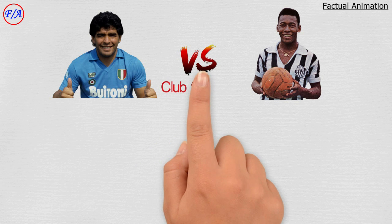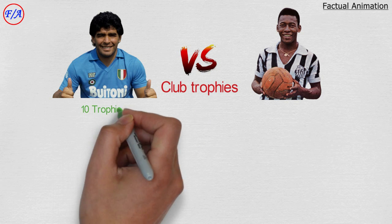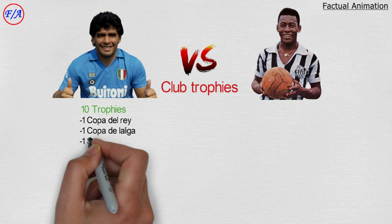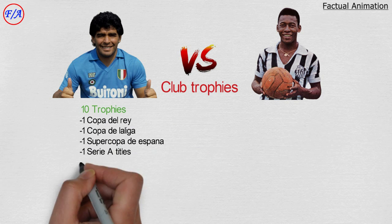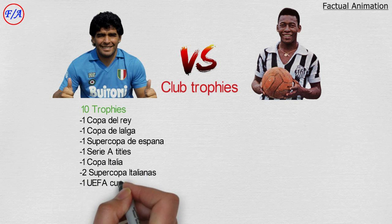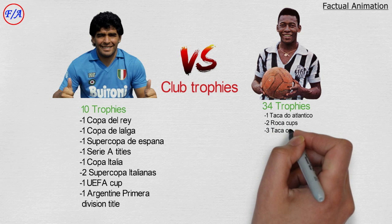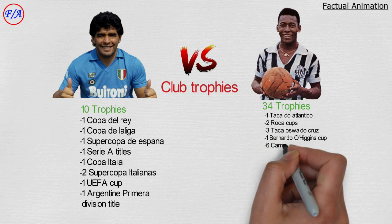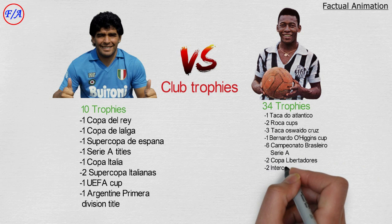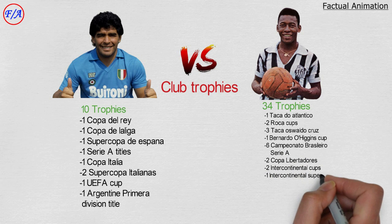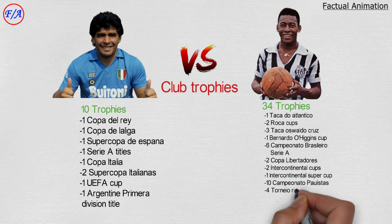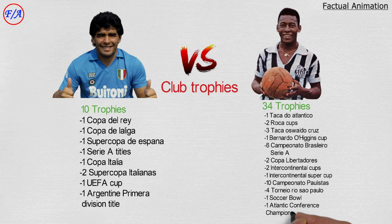Comparing club trophies: Maradona won 10 trophies — 1 Copa del Rey, 1 Copa de la Liga, 1 Supercopa de España, 2 Serie A titles, 1 Coppa Italia, 2 Supercoppe Italiane, 1 UEFA Cup, and 1 Argentine Primera División title. Pelé won 34 trophies with Santos, including 2 Copa Libertadores, 2 Intercontinental Cups, 6 Campeonato Brasileiro, and 10 Campeonato Paulista titles, among others.